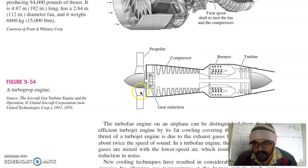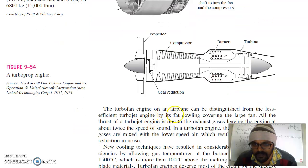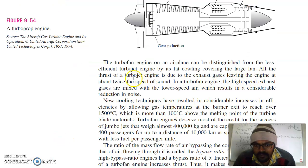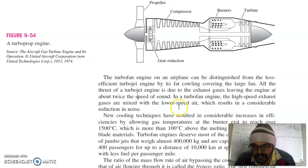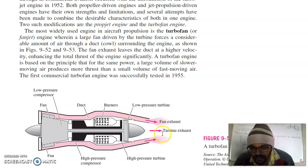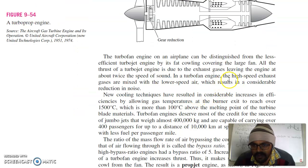Next is a turboprop engine. In turboprop, instead of turbofan, we use a propeller, which is open to the atmosphere. This is higher in diameter and it is out of the casing. This is compressor, burner and turbine. The turbofan engine on an airplane can be distinguished from the less efficient turbojet engine by its fan cowling covering the large fan. All the thrust of turbojet engine is due to exhaust gases leaving the engine at about twice the speed of sound. In turbofan engine, the high speed exhaust gases are mixed with the lower speed air, which results in considerable reduction in noise. The air which will come from this fan and the exhaust gas are mixed, which will reduce the noise level as well as the exhaust temperature of the air, which will increase the overall efficiency of the engine.